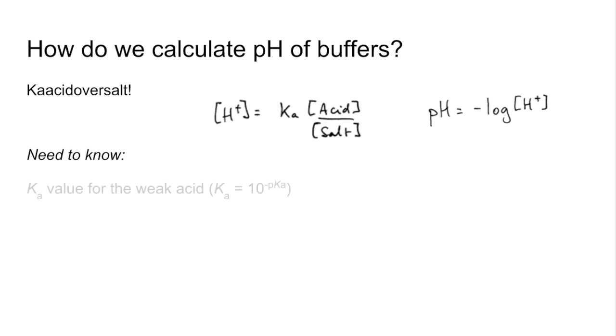We need to know the Ka value for the weak acid. Now they may give you the pKa value so to get the Ka it's just 10 to the minus pKa and we also need to know the equilibrium concentrations of the acid and salt.